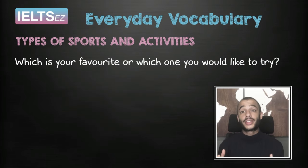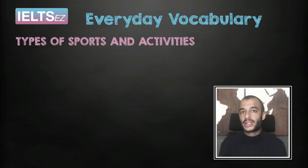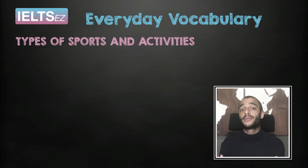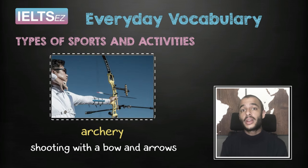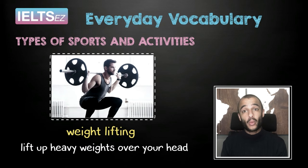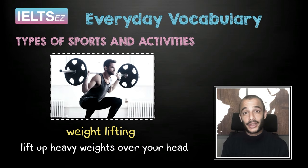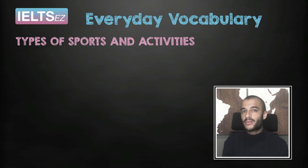Think about questions such as these in the real IELTS speaking test: What is your favourite sport or one you would like to try? You never know — you might get a question like this in the speaking module in part one. There may be a couple of sports here you don't know. What is archery? This sport involves shooting a bow and arrow. Archery. And weightlifting — this is where you have to lift up heavy weights over your head. Weightlifting. Remember these sports, or even better, write them all down in your notebook.